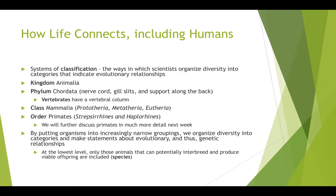When we put organisms into increasingly narrow groupings, we help to organize the diversity that we see on Earth and we're able to make statements about evolutionary and thus genetic relationships. As we move down into our system of taxonomic classification, we end up at the lowest level with species — only those that can potentially interbreed and produce viable offspring. This is our species-level designation.